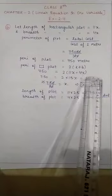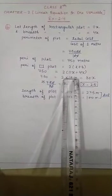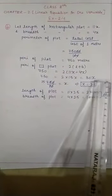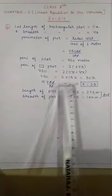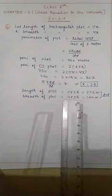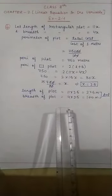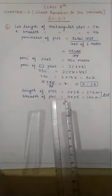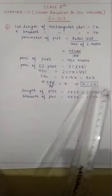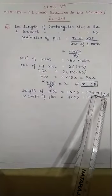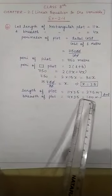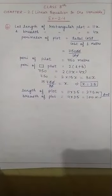The perimeter of the plot is 750 meters. Using perimeter = 2(length + breadth), we get 2(11x + 4x) = 750, so 2 × 15x = 750, giving 30x = 750, so x = 25. Therefore, the length of the plot is 11 × 25 = 275 meters and the breadth is 4 × 25 = 100 meters.